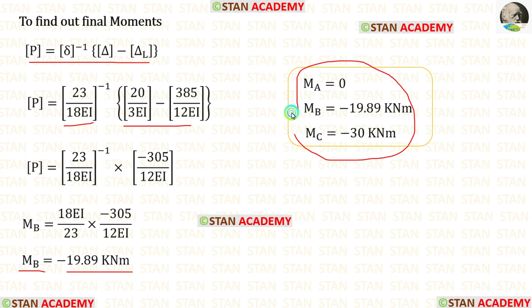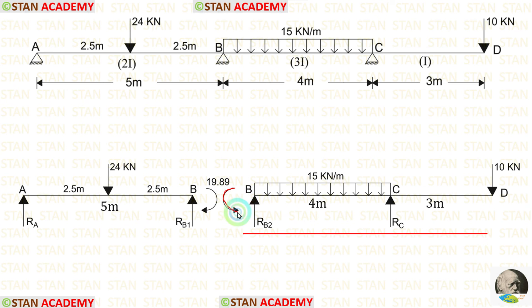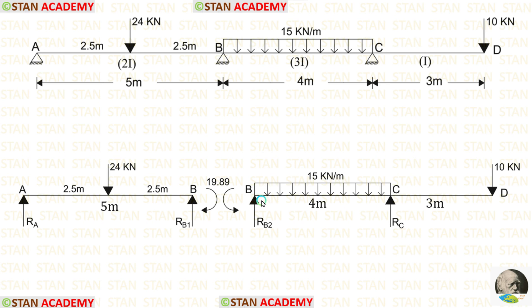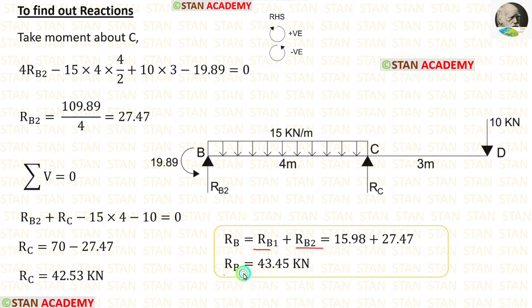We have now calculated all moments. For span AB, MB acts in the clockwise direction; for span BC, MB acts in the anticlockwise direction. Taking span AB and applying moment about B gives RA, and applying Sigma V = 0 gives RB1. Taking span BC together with overhanging span CD, and taking moment about C gives RB2, and applying Sigma V = 0 gives RC. Adding RB1 and RB2 gives the total reaction RB.